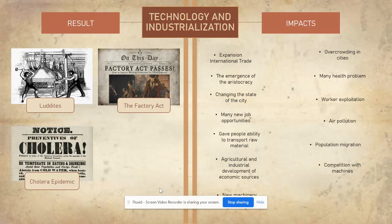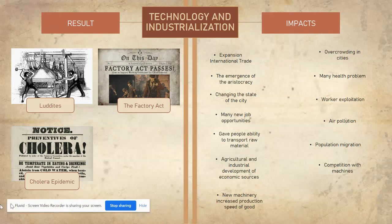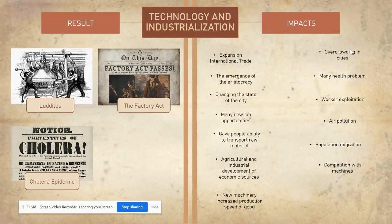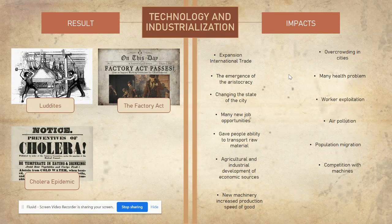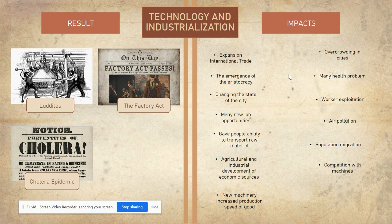In conclusion, industrialization gave both good and bad impacts towards society. The good impacts include: expansion of international trade, the emergence of the aristocracy, changing the state of cities, many new job opportunities, the ability to transport raw materials, agricultural and industrial economic development, and new machinery increasing the production speed of goods. The bad impacts include: overcrowding in cities, many social problems, worker exploitation, air pollution, population migration, and competition with machines.